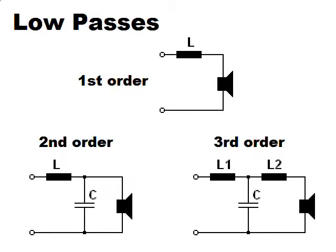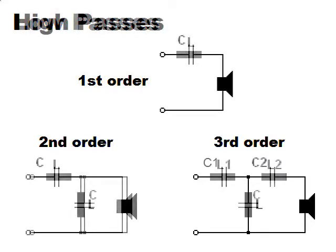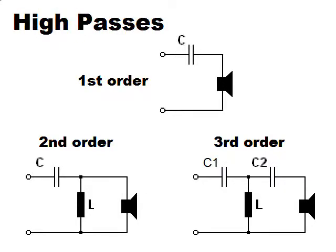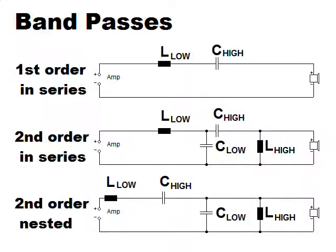A low pass lets low frequencies pass to the woofer. A first order low pass contains a coil in series with the woofer. A second order low pass additionally contains a capacitor in parallel to the driver connected to the point between coil and driver. A high pass lets high frequencies pass to the tweeter. It looks similar to a low pass but caps are exchanged with coils and vice versa. A band pass lets a limited bandwidth pass to a midrange driver. All of them are called filters.